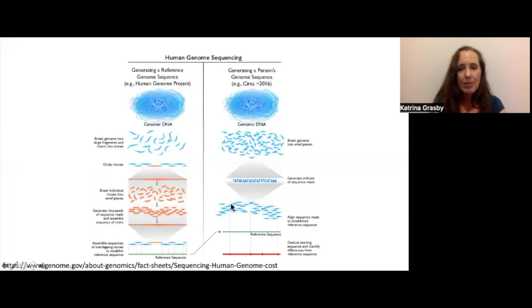Once read, these little pieces of DNA are aligned against a reference sequence. Once we have them all aligned, we then have a whole genome sequence of an individual and can identify points along it that are either the same or different to the reference, or the same or different to other individuals.